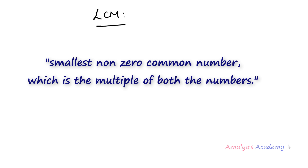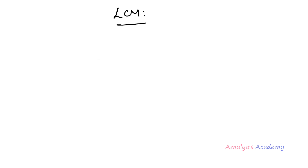We can find out the LCM of two numbers in different ways. One way is we can find out the first few multiples of the given two numbers and in that we can find out the least common multiple. For example, this is the first way — here we will take the two numbers as 24 and 36.